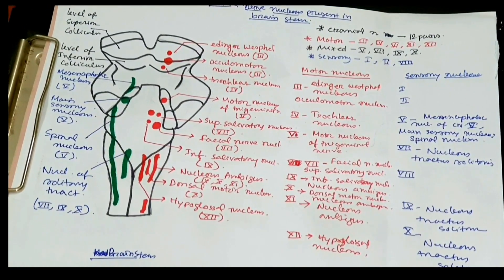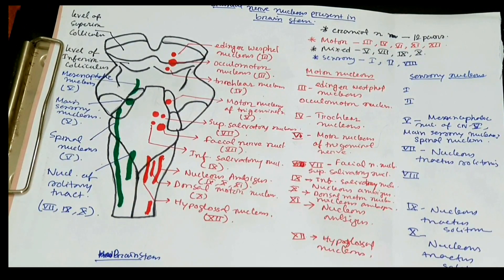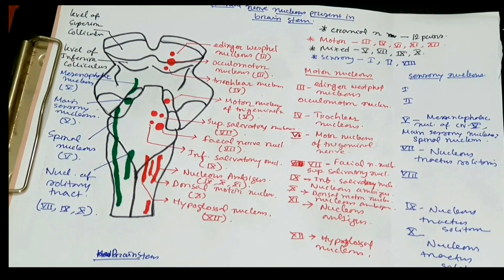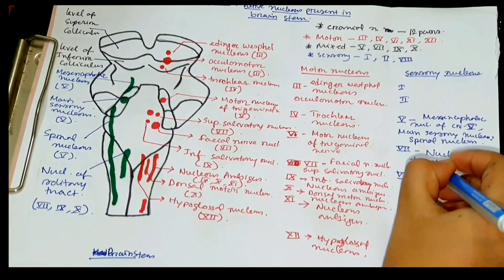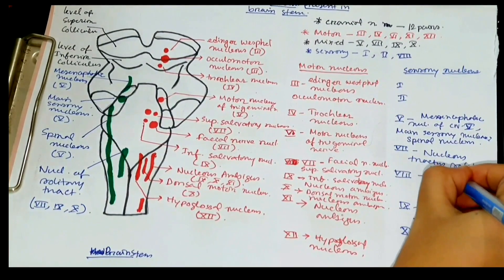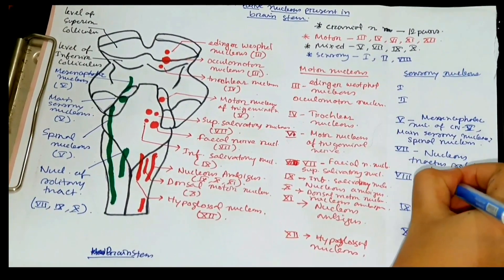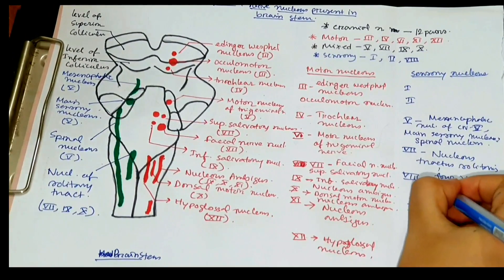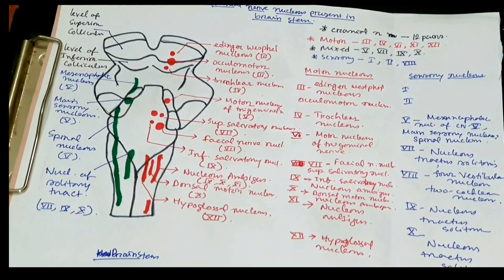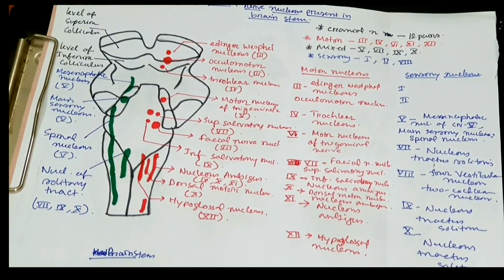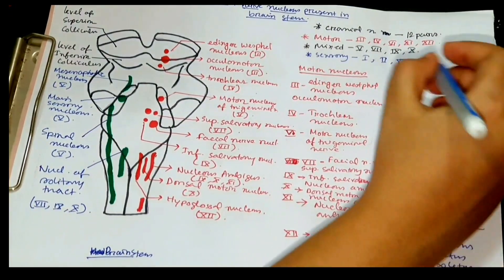Now, cranial nerve eight has two parts: the vestibular part and the cochlear part. It is purely sensory. The vestibular part has four nuclei, and the cochlear part has two nuclei. All of these are sensory nuclei.